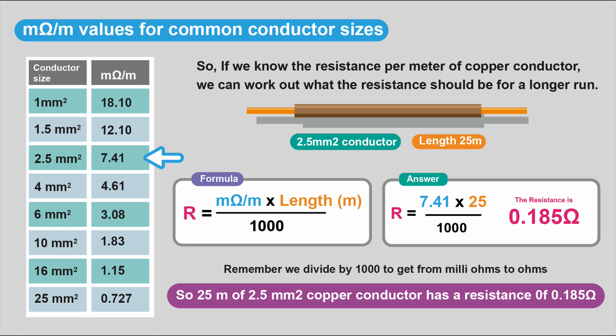So if we've got a 2.5 millimeter conductor of 25 meters, that's 7.41 times 25 divided by 1,000, and that will give us a resistance of 0.185 ohms. So 25 meters of 2.5 millimeter squared copper conductor has a resistance of 0.185 ohms.